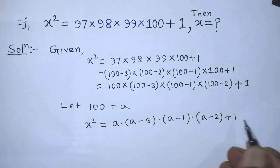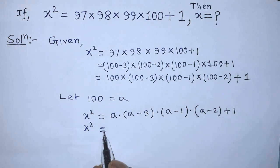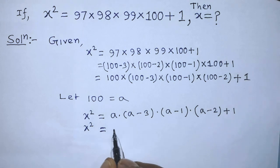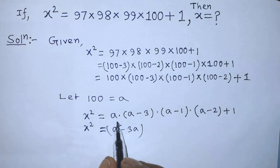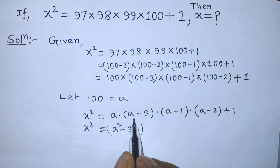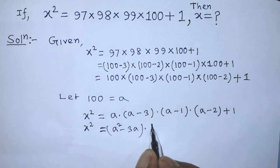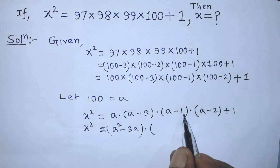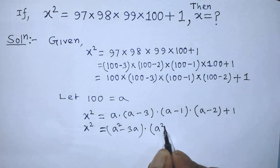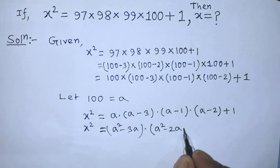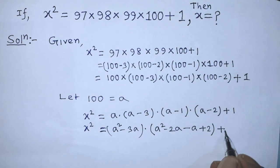On the right hand side we can write (a² minus 3a) times (a minus 1)(a minus 2) plus 1. If you multiply (a minus 1) with (a minus 2) you get a² minus 2a minus a plus 2, giving (a² minus 3a) times (a² minus 3a + 2) plus 1.